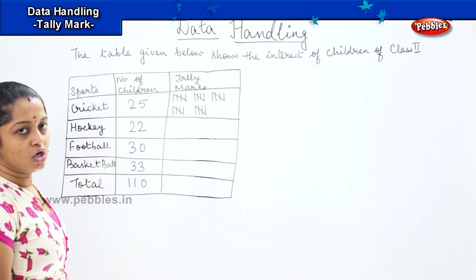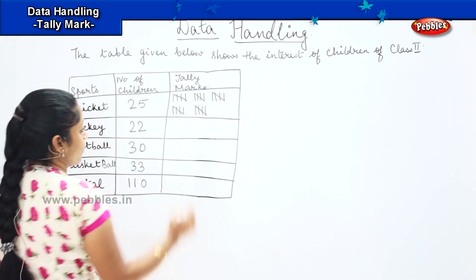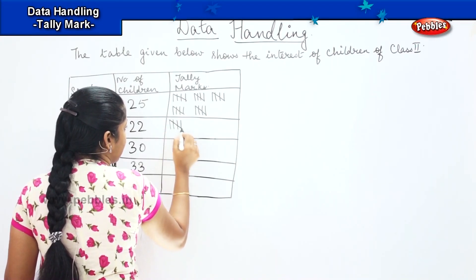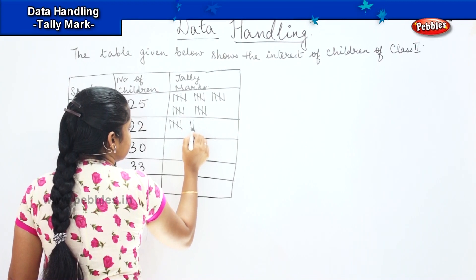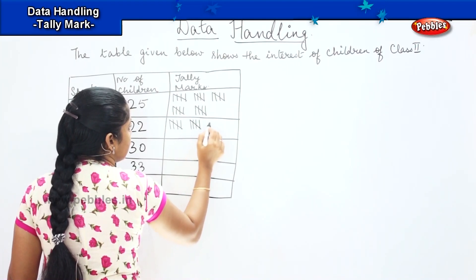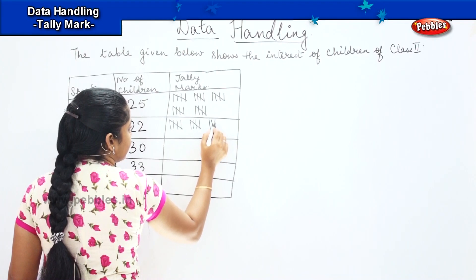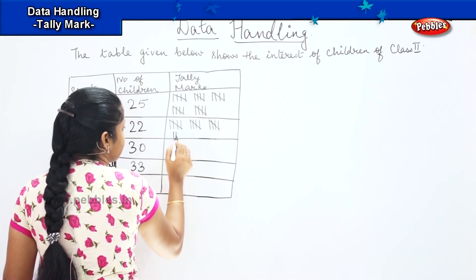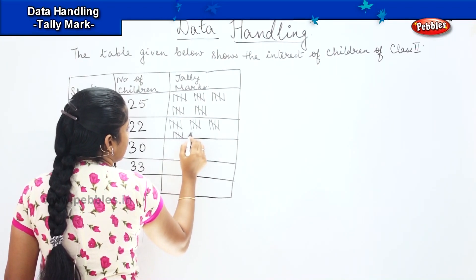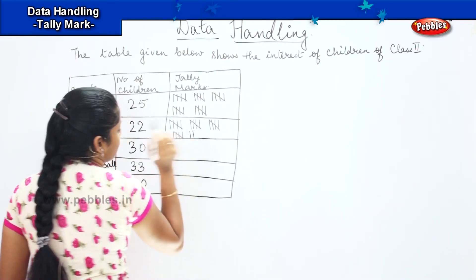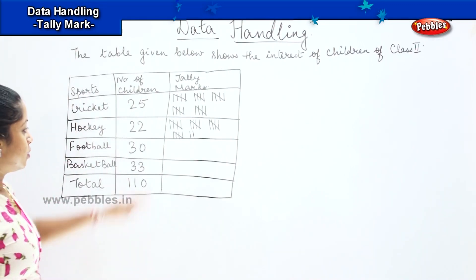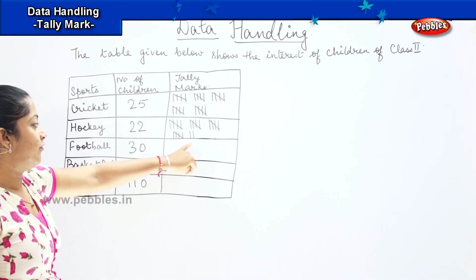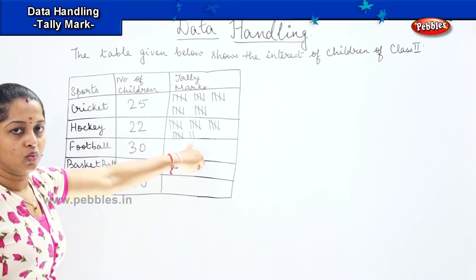Next we are going to draw 22. So we have 4 tally groups which have a slanting line and the fifth group is just the two remaining numbers.